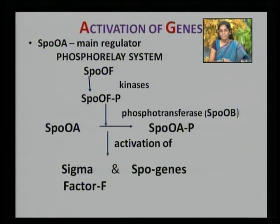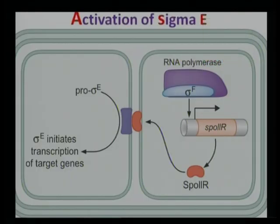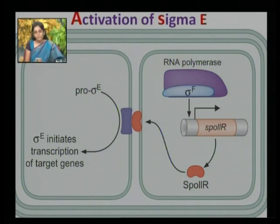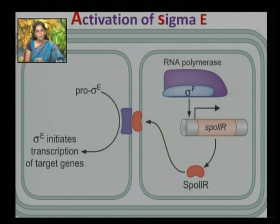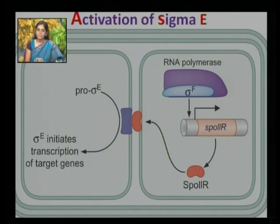The phosphorylated Spo0A also activates many sigma factors like sigma factor F and sigma factor G. Many other sigma factors are under the control of sigma F, which needs to be activated. One such example is the activation of sigma E. Sigma F binds with RNA polymerase and transcribes the SpoIIR gene, leading to the translation of SpoIIR protein. This SpoIIR protein is a protease which cleaves the N-terminal inhibitory peptide chain of pro-sigma E, thereby activating it to sigma E.